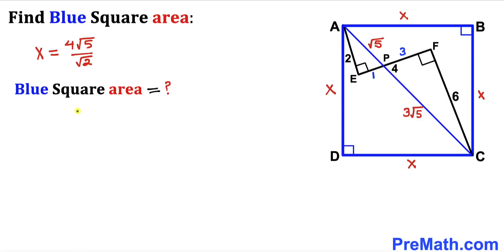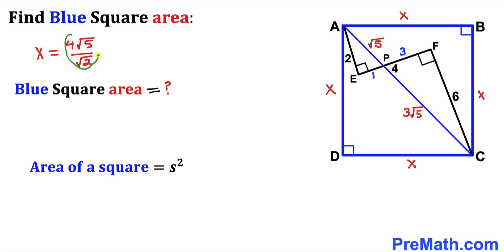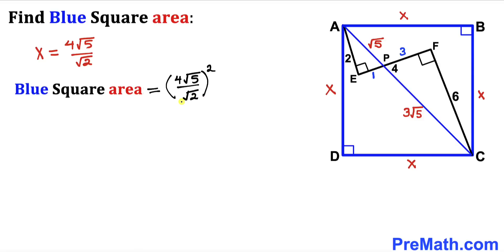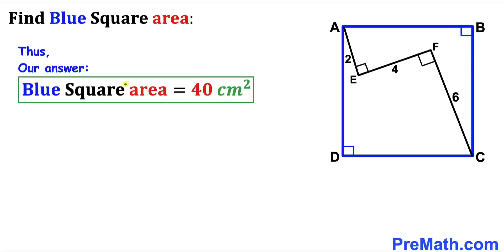For the final step, let's calculate the area of the blue square ABCD using area = s², where s is the side length. The side length X = 4√5/√2, so the area = (4√5/√2)² = 16 × 5/2 = 40 cm². The area of the blue square ABCD is 40 cm². Thanks for watching — please subscribe for more exciting videos!